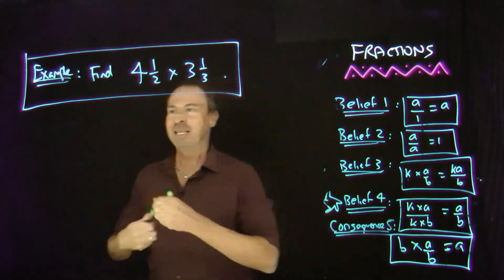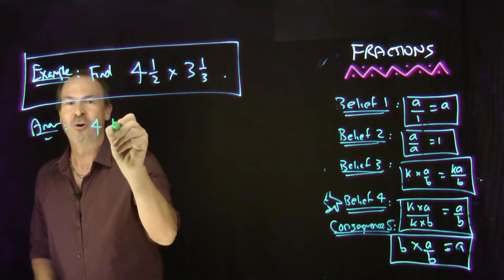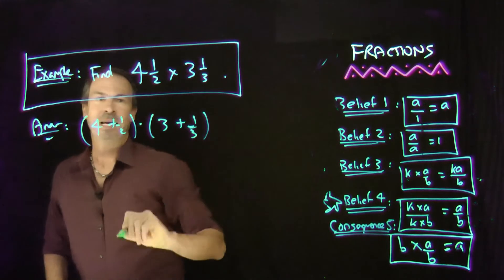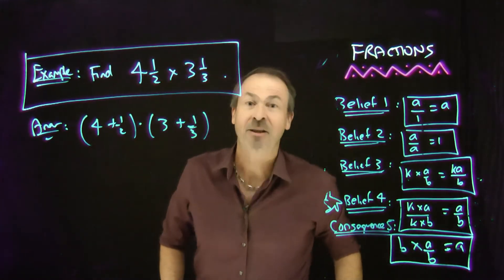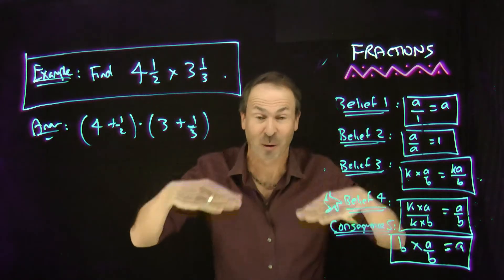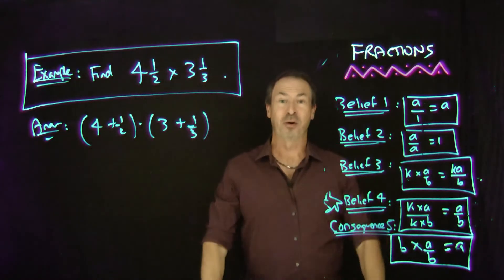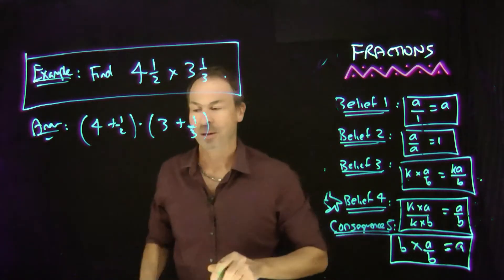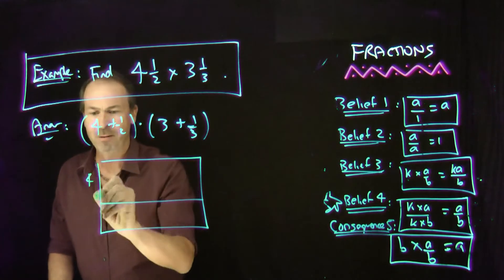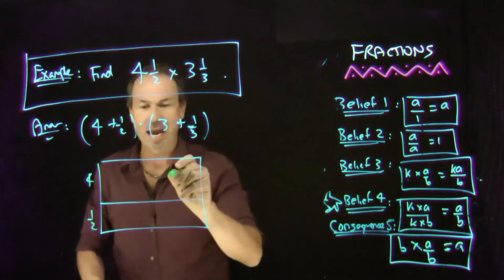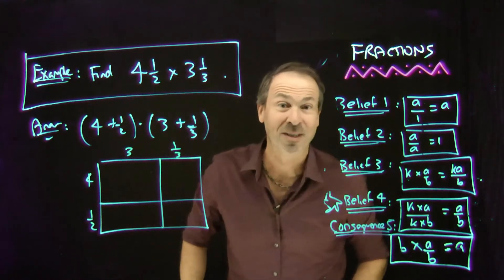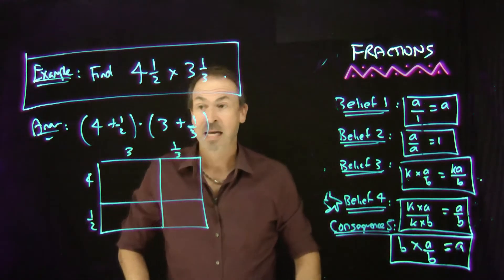This is really 4 plus a half times 3 plus a third. It's really actually going back to the distributive rule. We're actually chopping up a rectangle. Remember, we like to say all those rules of arithmetic, including chopping up rectangles, should hold no matter what. Should hold even for this example. So what's the rectangle I've got here? I've got 4 and a half. I've got 3 and a third. Okay, my rectangle is so not to scale. It doesn't matter. Its information is correct.